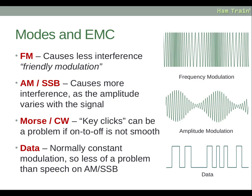Morse code and CW are the same thing — Morse code is effectively CW; CW is the mode, and Morse is the language. This can cause key clicks, which can be a problem if the on-to-off transition is not smooth. If you look at the data signal, you can see very sharp square edges. That can cause clicking, but in most modern equipment this is sorted out by rounding those edges, which stops the clicking noise that people might hear through their TV or sound system. The same applies to data, although data is normally constant modulation, so it tends to be less of a problem than speech on AM or SSB.